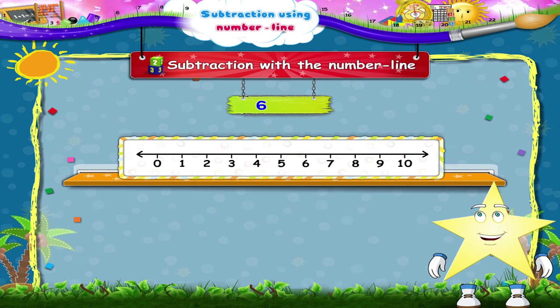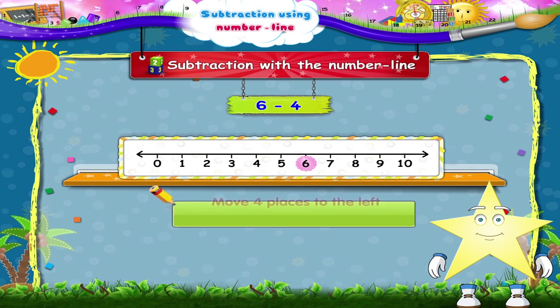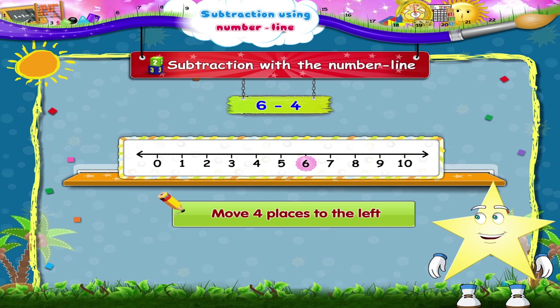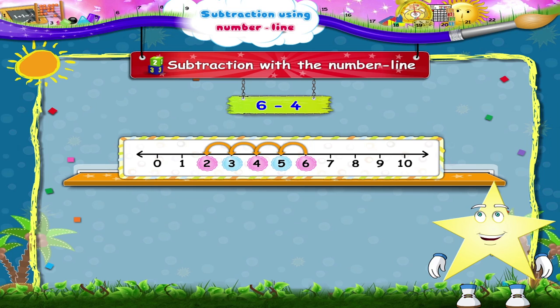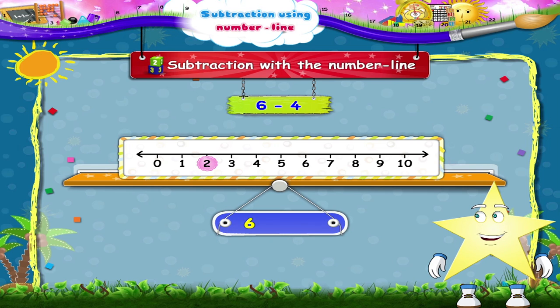What about six minus four? Start from six. We move four places to the left. One, two, three, four. We reach the number two. So six minus four is two.